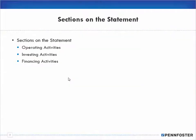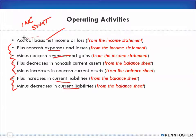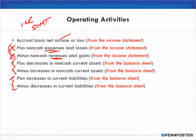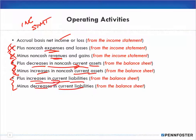It was easier to first see investing and financing separately, and now bringing back in operating: I have my income statement, and then these two sections on my balance sheet — current assets and current liabilities — to look at for operating activities. So you're really looking at five different things for operating activities: net income, expenses, revenues, non-cash current assets, and current liabilities.